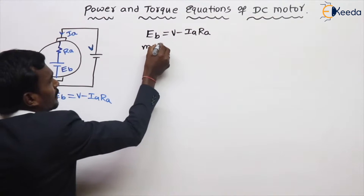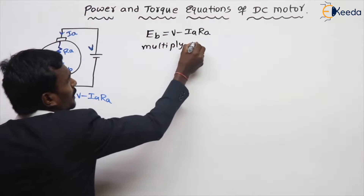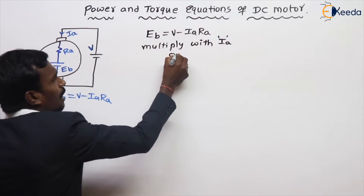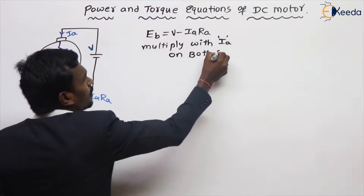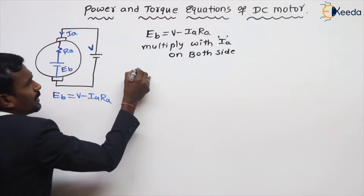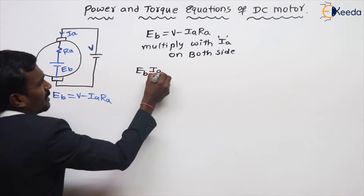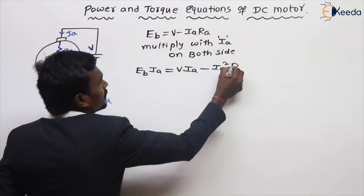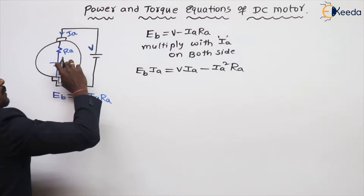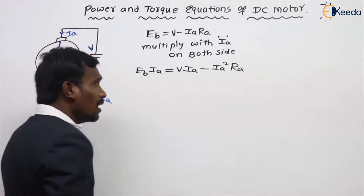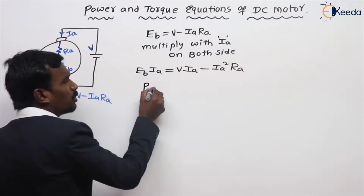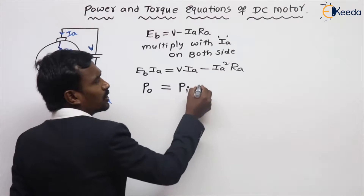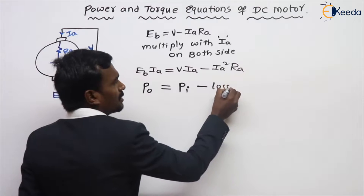Multiply both sides with IA. So EB into IA is equals to V into IA minus IA squared RA. Here, EB into IA is the power output of the machine developed in the armature, V into IA is the power input, and IA squared RA represents the losses.